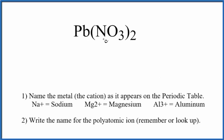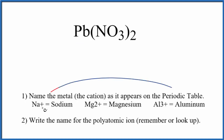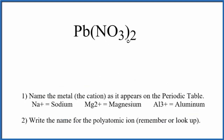To write the name for Pb(NO₃)₂, we first need to recognize this NO₃ here. This is the nitrate ion — it's a polyatomic ion, and we have two of them bonded to the lead atom. Lead is a transition metal, so we have a metal and a polyatomic ion made up of nonmetals. Metal and nonmetals — that's an ionic compound, so we can use these rules to write the name for Pb(NO₃)₂.